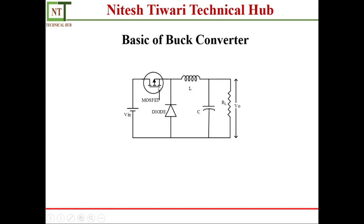Due to these switches, the buck converter works in two modes. In the first mode, when the MOSFET is on, the diode goes off, current flows and the inductor gets charged. In the second half cycle, when the MOSFET goes off, the diode turns on, and the inductor releases its energy through the resistor or load — and this process continues. In the end, you get a reduced voltage level on the output side, meaning V_out is always less than V_in. So the buck converter is essentially a DC step-down transformer.